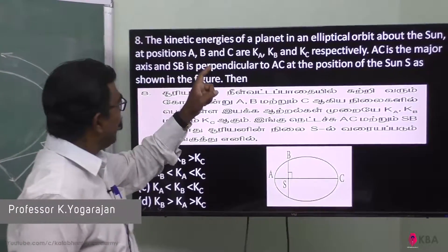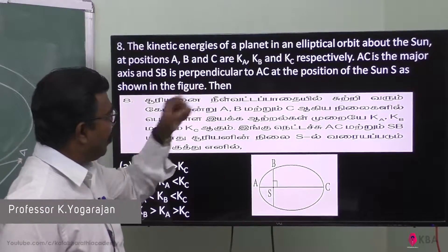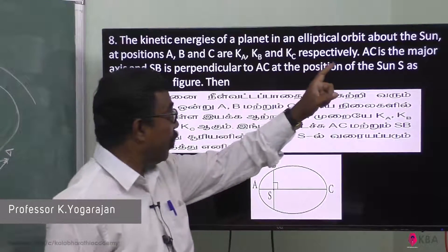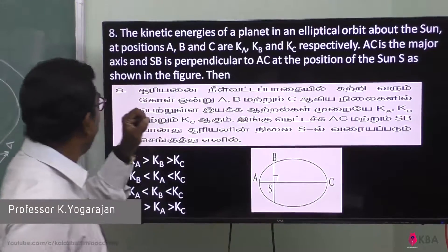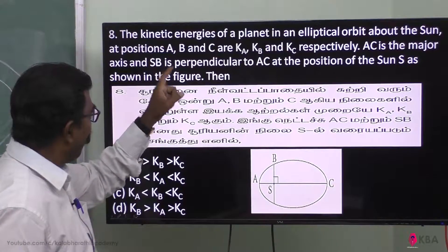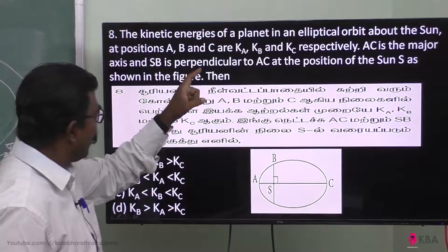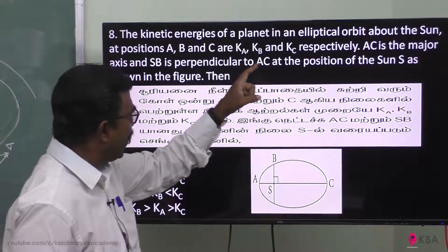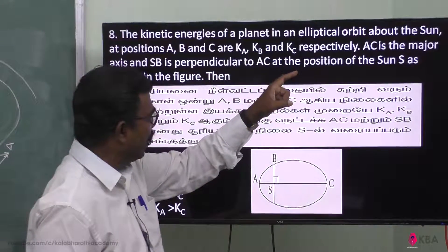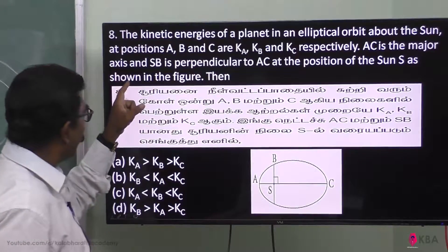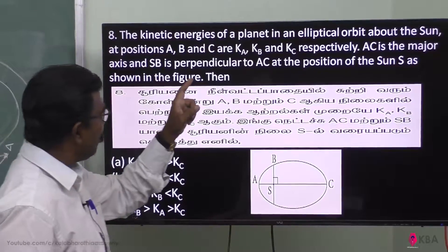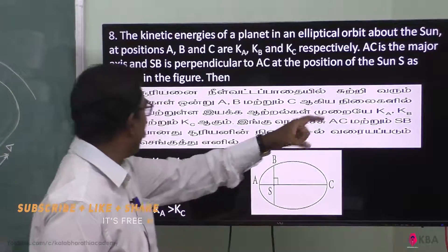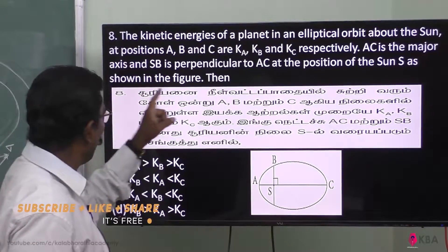The kinetic energies of a planet in an elliptical orbit about the sun at positions A, B and C are Ka, Kb and Kc respectively. AC is the major axis and SB is the perpendicular to AC at the position of the sun, as shown in the figure.